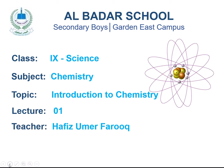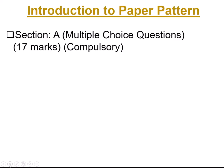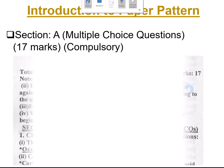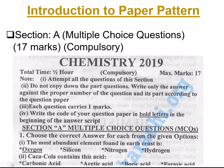Before we start our first chapter, we talk about the paper pattern. Our paper pattern has three sections: Section A, Section B, and Section C. Section A consists of multiple choice questions — 17 MCQs, and every MCQ carries one mark. These MCQs are from the whole book.